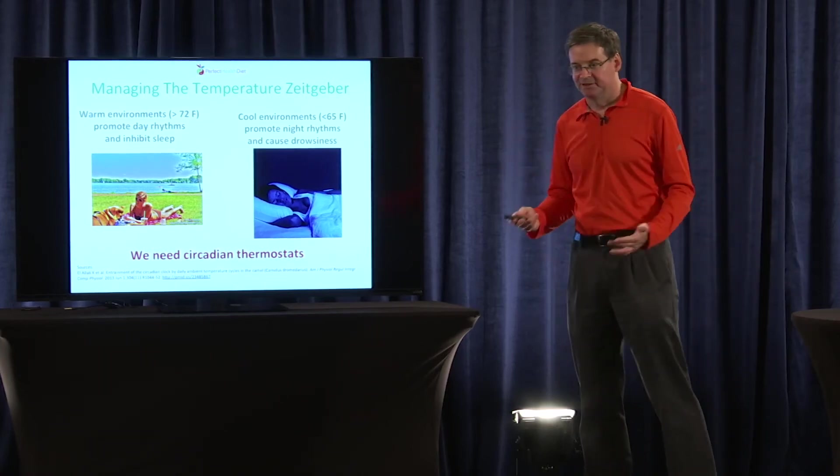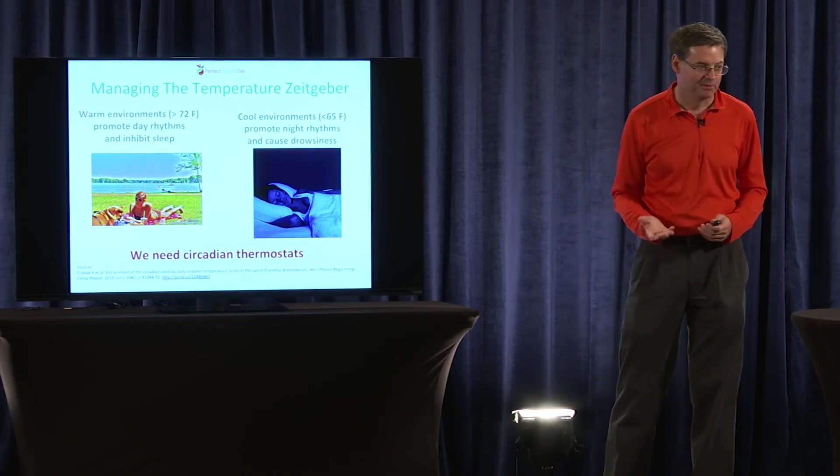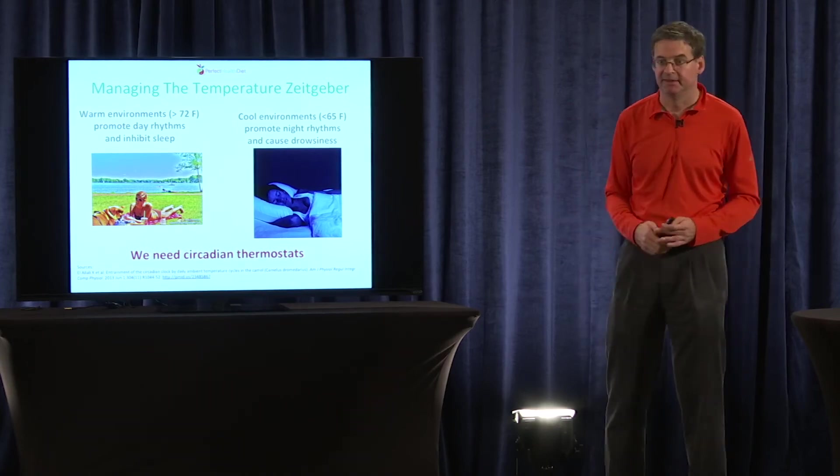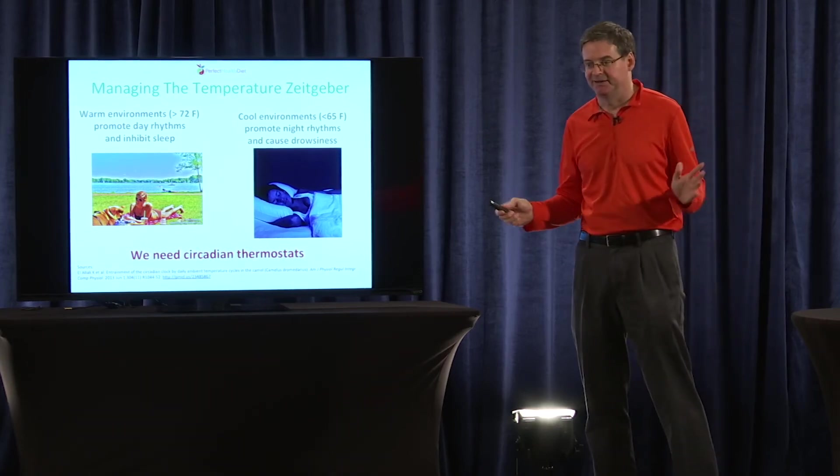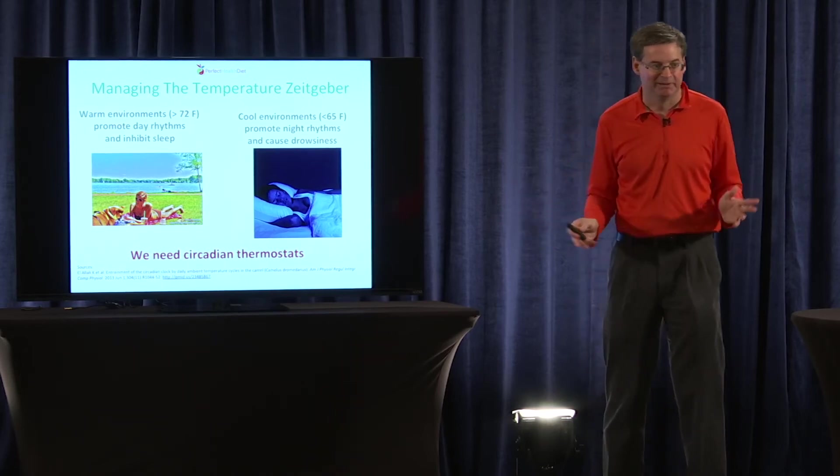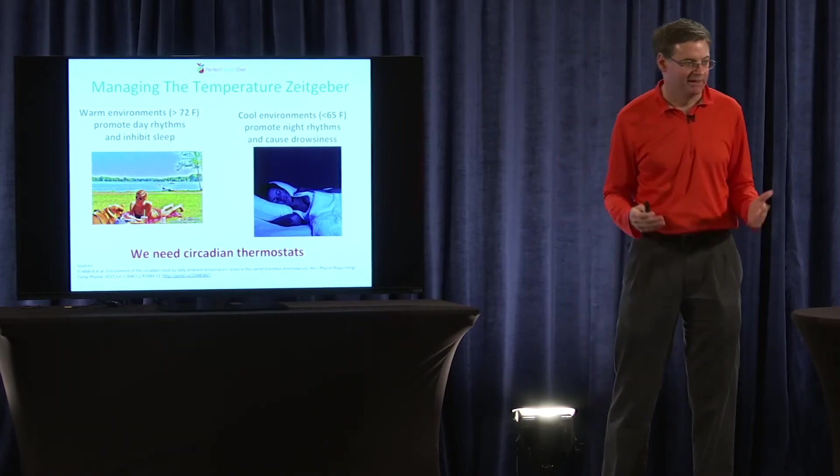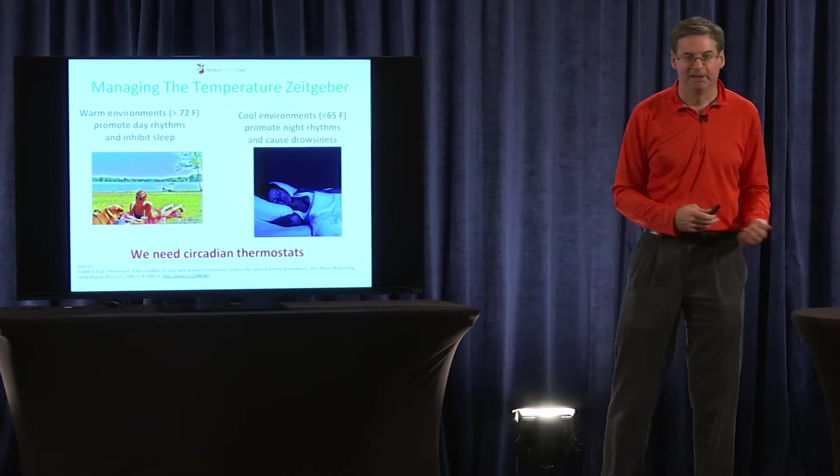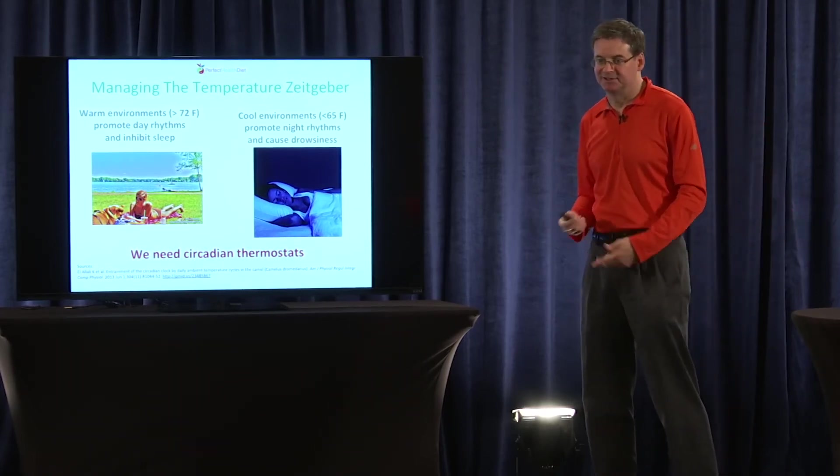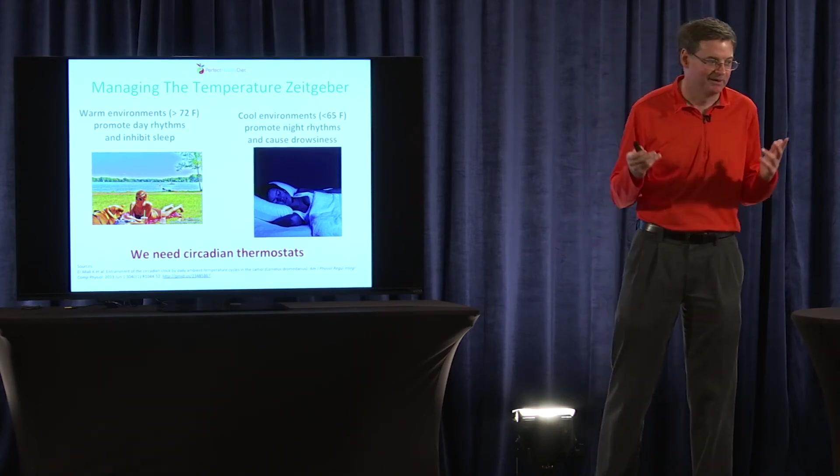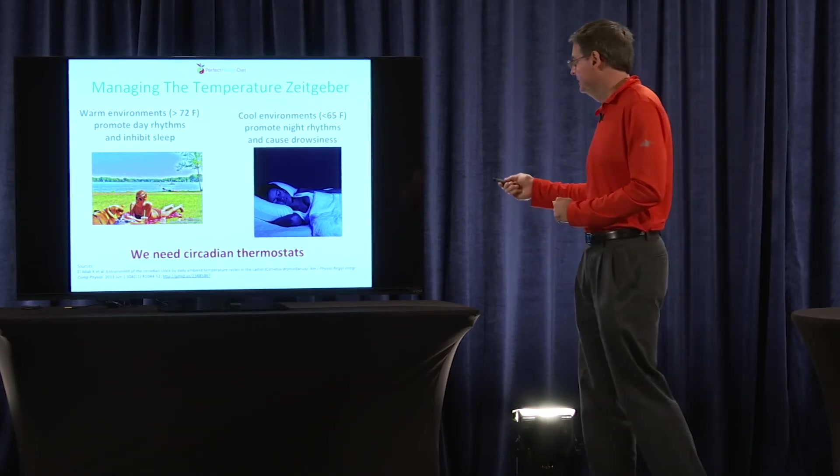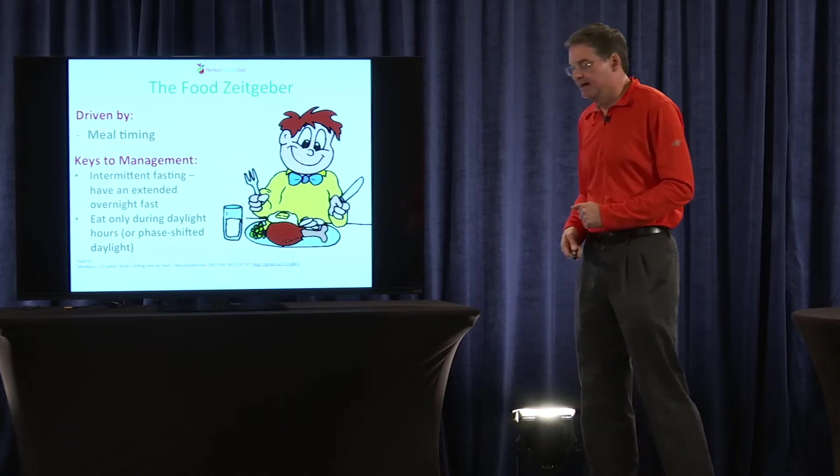But now that we have artificial control of our environments, what do we do? Especially if you're in the south, you put air conditioning on all day, so it's cool. And you go through offices, the mall, everything's very cold. And then you get home, and you want to save money on energy, and so you turn the air conditioning off, and now it gets warm. So you've reversed the day-night cycle.